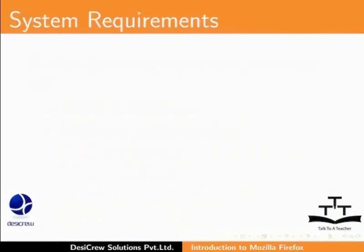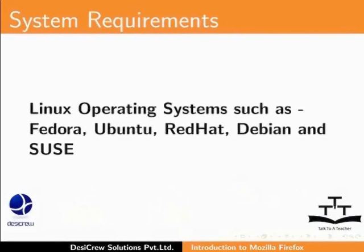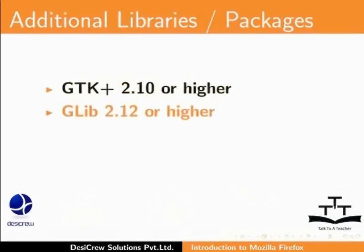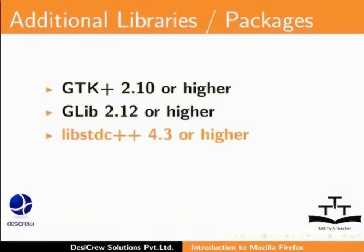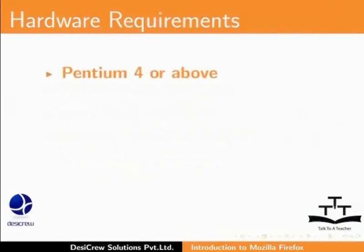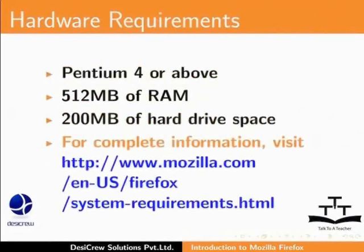Here are the system requirements to run Firefox on Linux OS such as Fedora, Ubuntu, Red Hat, Debian, and SUSE. You will need the following libraries or packages for Ubuntu 10.04: gtkplus 2.10 or higher, glib 2.12 or higher, libstd C++ 4.3 or higher, pango 1.14 or higher, and x.org 1.7 or higher. The recommended hardware is a Pentium 4 or above with 512 MB of RAM and 200 MB of hard drive space. For complete information on system requirements, visit the Firefox website shown on the screen.